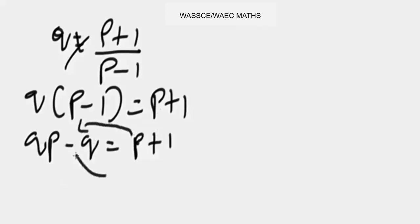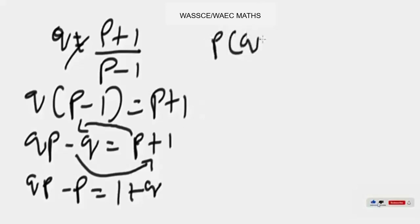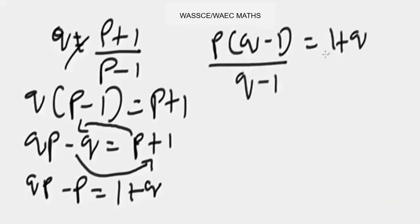So you're going to have qp minus p equals one plus q. Now when you factorize qp minus p, I'm going to have p in brackets, q minus one, equals one plus q. To make p the subject of the formula, divide both sides by q minus one.